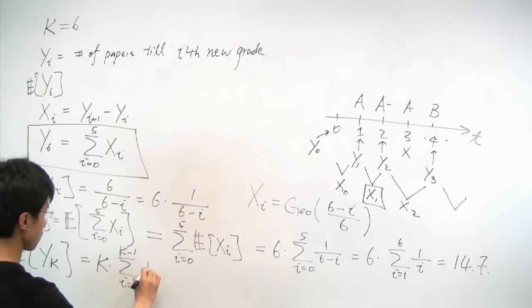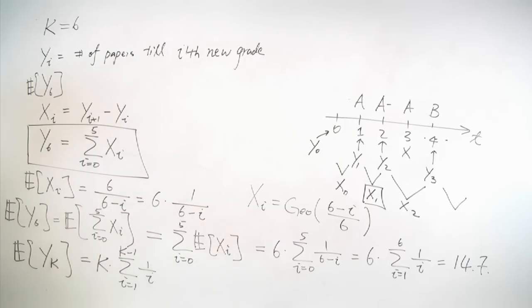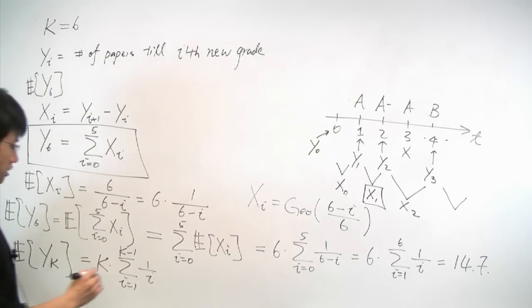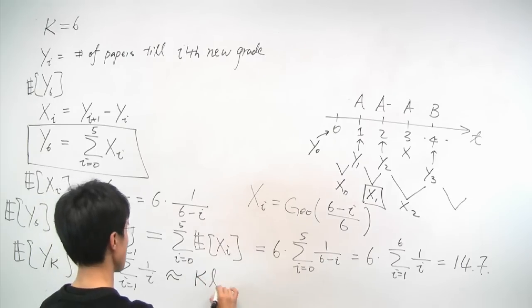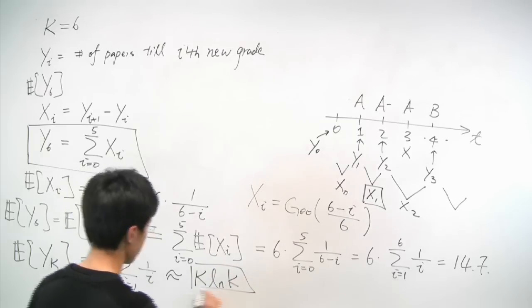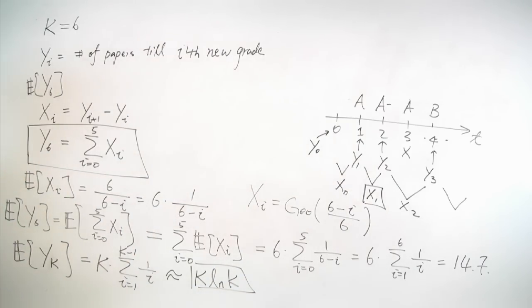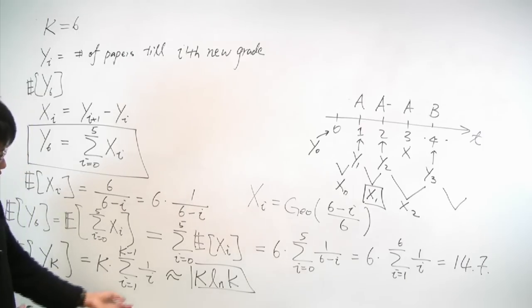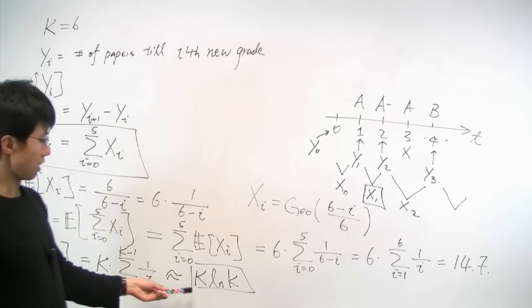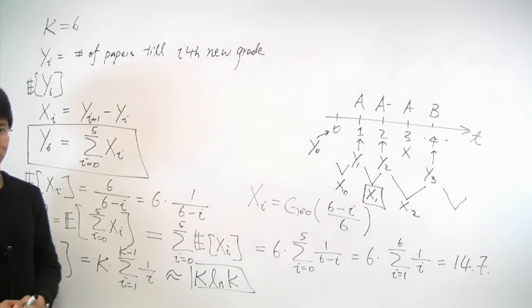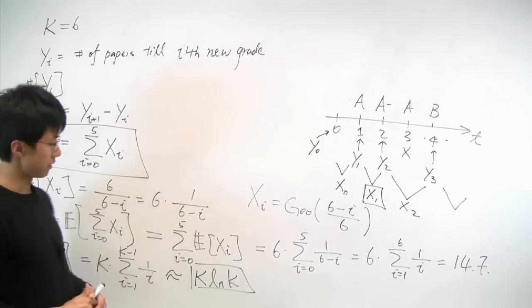Interestingly, it turns out this quantity has an asymptotic expression that essentially is roughly equal to k times the natural logarithm of k. And this is known as the scaling law for the coupon collector's problem that says essentially it takes about k times log k many trials until we collect all k coupons. And that will be the end of the problem.